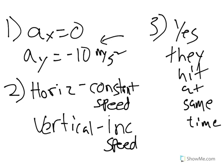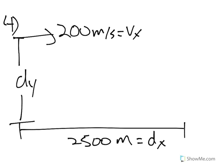Number three, what will happen if I drop an object straight down at the same time I shoot an object out of a cannon horizontally? Will they land at the same time? Yes, they will hit at the same time, because x and y act independently.